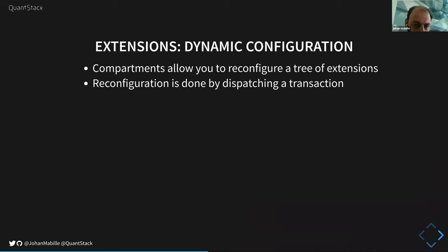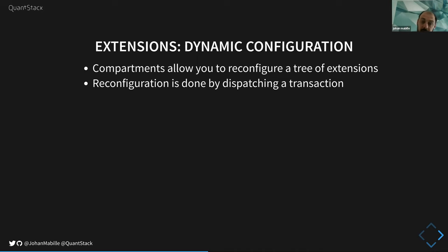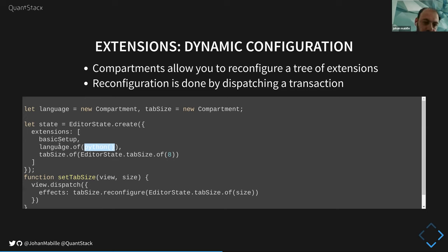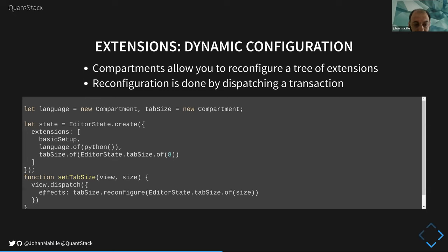The issue with facets used this way is that they are set once for good — you cannot reconfigure them. So if you want dynamic configuration, you need to use something called a compartment. A compartment allows you to reconfigure a tree of extensions or part of the tree — done by dispatching a transaction, just as you would update state. For example, you create a compartment for the language and the tab size. If you want to change the tab size later, you dispatch a transaction that embeds an effect which reconfigures the tab size compartment with the new value.